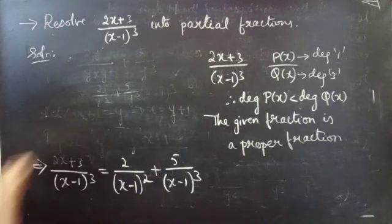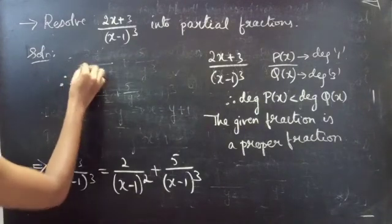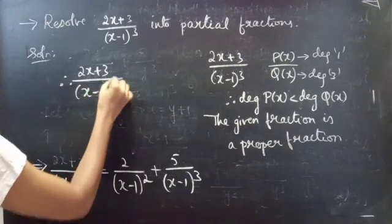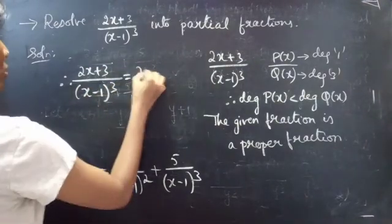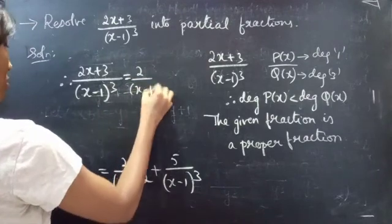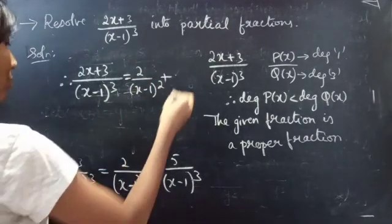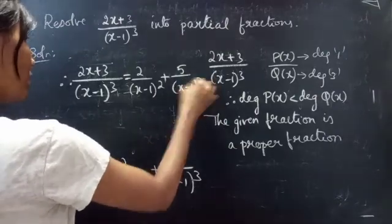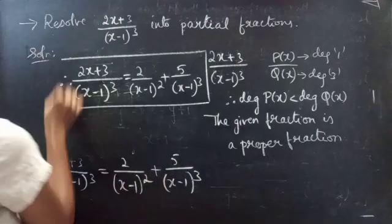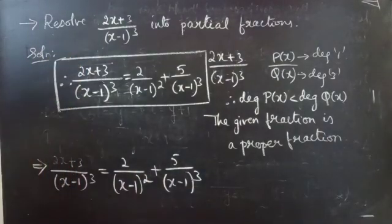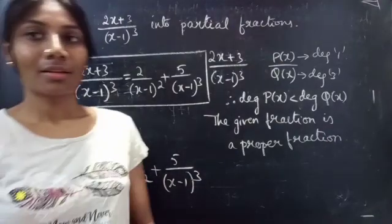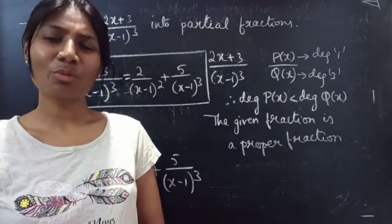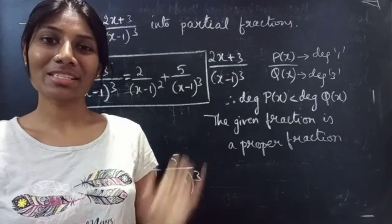Therefore, (2x + 3) / (x - 1)³ = 2/(x - 1)² + 5/(x - 1)³. We have seen a problem in partial fractions. Hope you will understand. We will see you in the next video. Bye-bye.